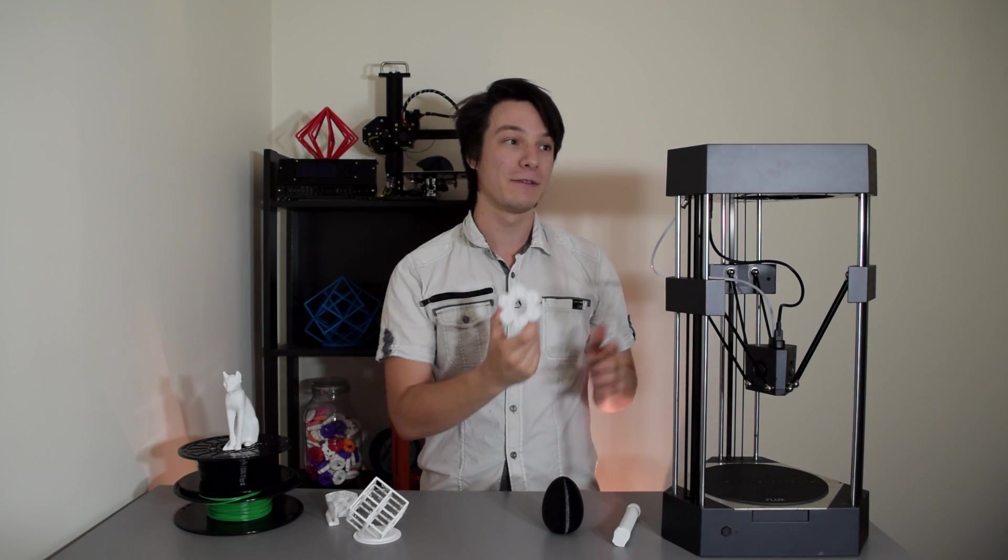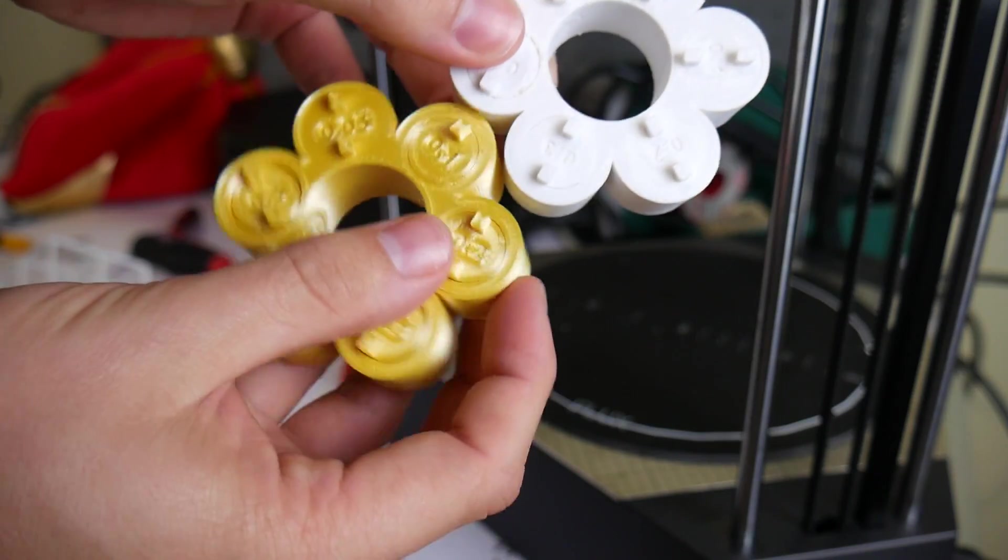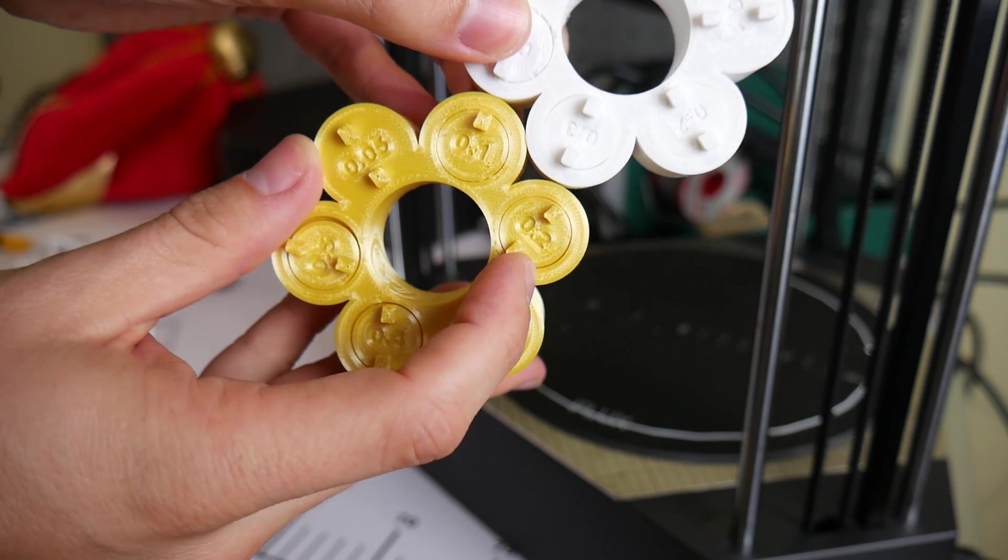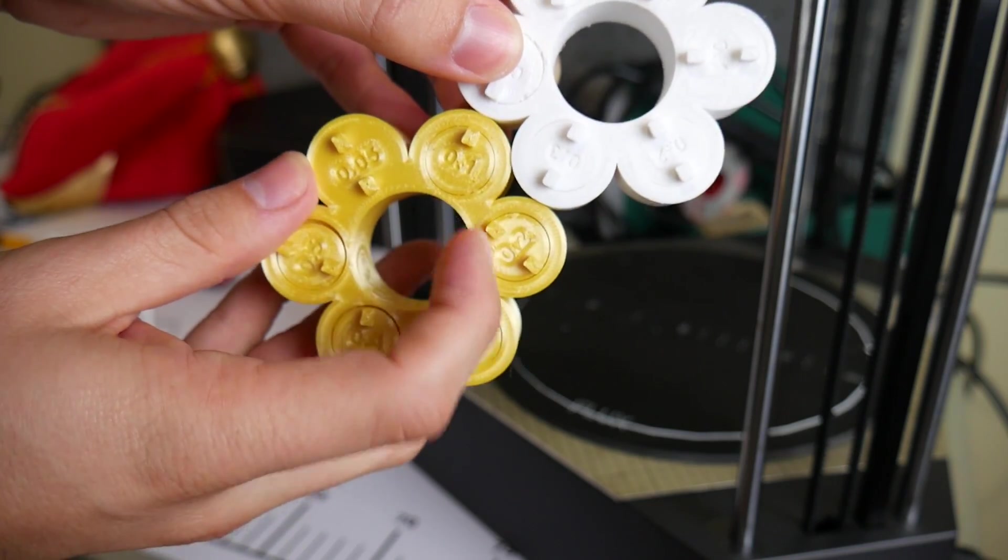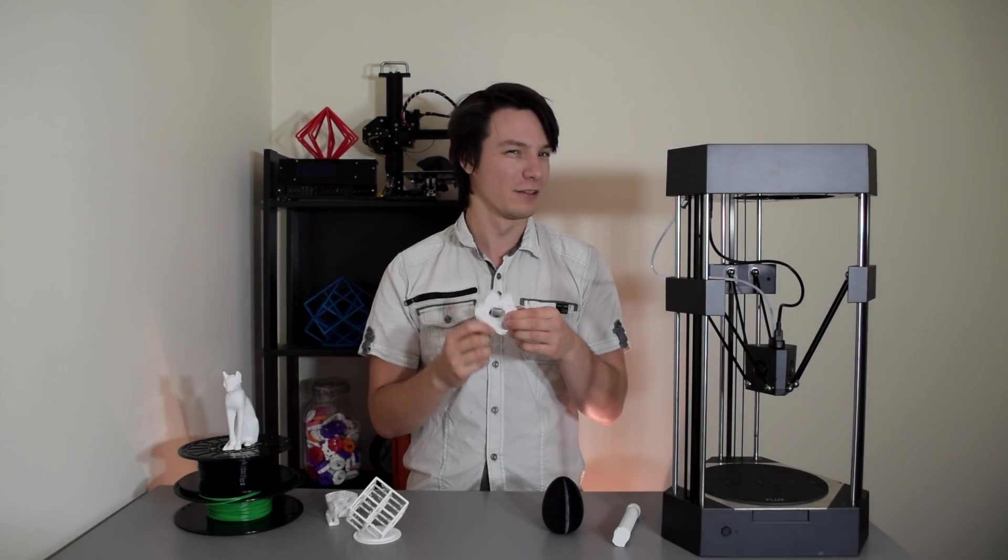So this is with the default settings with the PLA that was supplied. And just as a comparison, the Prusa i3 Mark 2 managed to get them free all the way down to 0.2-millimeter gap. So in terms of printing detail, this isn't a very good result.